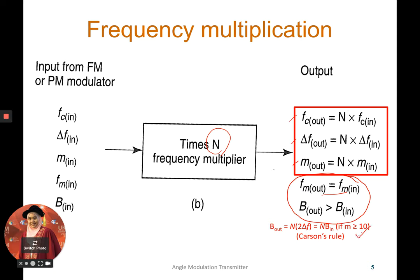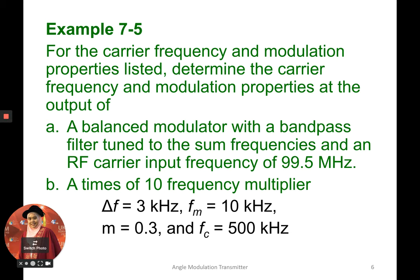The bandwidth increase is calculated using the equation where N is multiplied by the frequency deviation. The three parameters that change are: carrier frequency at the output, frequency deviation at the output, and modulation index at the output — all multiplied by the frequency multiplier N. So when using frequency multiplication, not only the carrier frequency is up-converted, but the deviation frequency and modulation index also increase simultaneously.